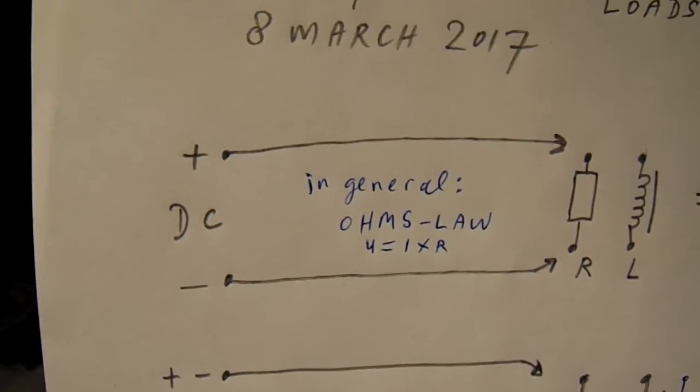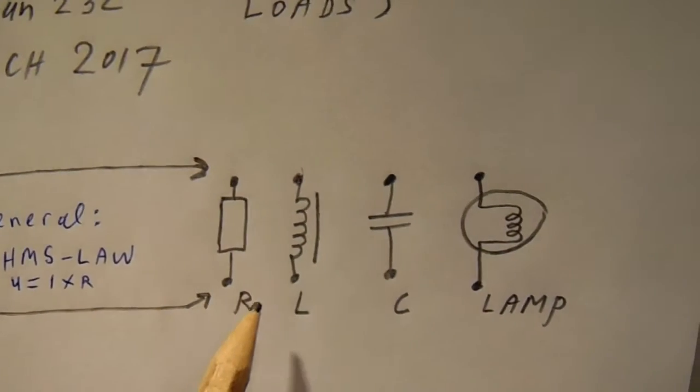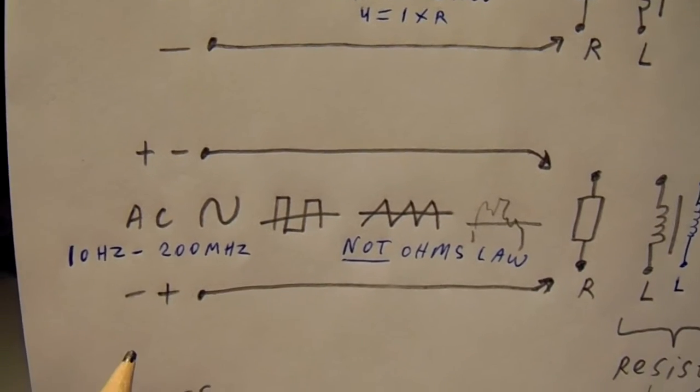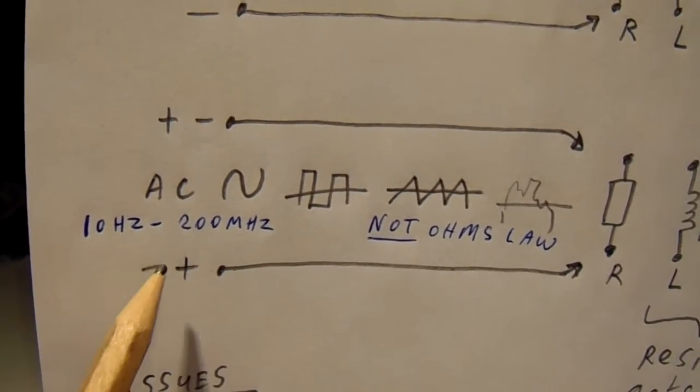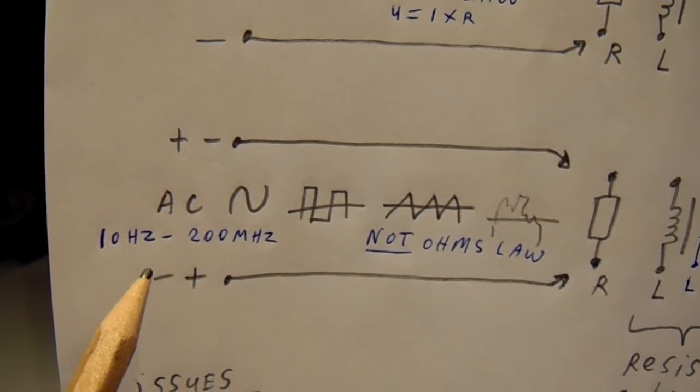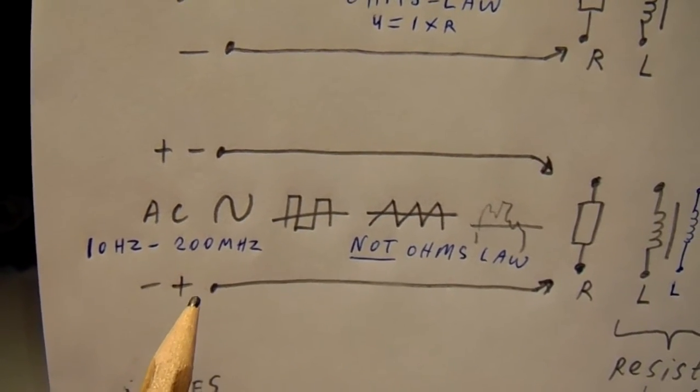And the first very important thing to tell is that on DC these loads act completely different compared to AC. So when you have a signal generator from whatever kind, with frequencies between say 10 hertz and 200 megahertz, these loads act different.